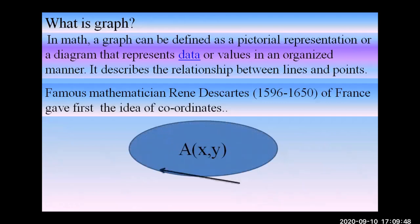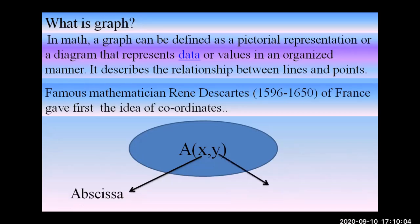Suppose a point A has coordinates x and y. X and y can be any number — positive, negative, 2, 3, 4, 5, whatever. This x coordinate is called the abscissa, and the y coordinate is called the ordinate.